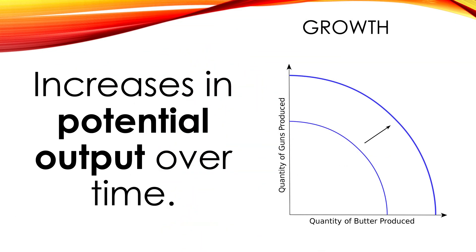The second goal is economic growth. Looking at a production possibilities frontier, that line represents efficiency, but it also represents potential output — how much could the economy produce when using all of its resources to the fullest potential? The production possibilities frontier tells us what they could do; that's what potential is all about. When we talk about economic growth, we're not talking about producing at a point inside the line or on the line. We're talking about moving the line itself.